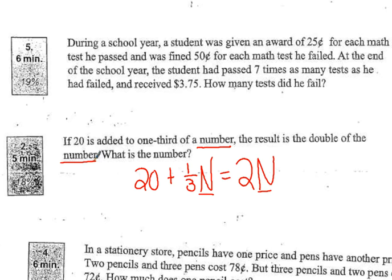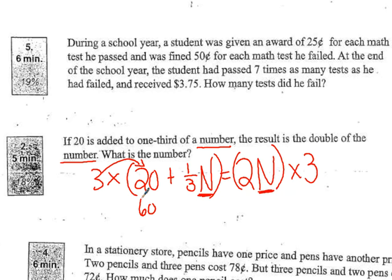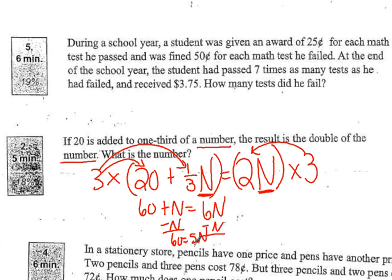So, just like I've done before, I want to try to get this by itself somehow, get the variable by itself. So, one way to do this is this is being multiplied by a third. So, in order to make this 1, I have to multiply it by 3. So, I can multiply this whole thing by 3, which means I have to multiply this by 3 to keep my equations even. 3 times 20 is 60. And 3 times one-third is 1. So, I'm just left with N. And 3 times 2 is 6. So, I have 6N. Now, I can get rid of this N by subtracting N. And if I do it over here, I do it over here. So, now I'm left with 60 equals 5N. To get N by itself, let me write that over here. So, 60 equals 5N. To get N by itself, I divide it by 5. Divide this by 5. And I get 12 equals N. So, my answer is 12.